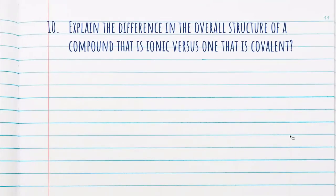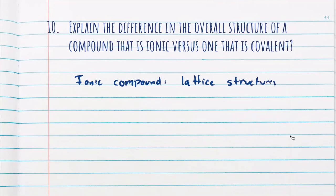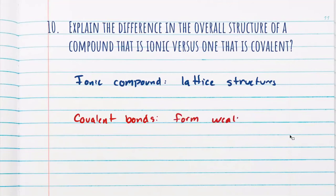Question 10 asks to explain the difference in structures between ionic compounds and covalent compounds. Ionic compounds form lattice structures, held together by the charges between the cation and the anion, making really strong and sturdy structures. On the other hand, covalent bonds don't really have that structure — they can form networks, but because they're not held by cations and anions, there's no electrostatic attraction, so they're not as strong and can break really easily.